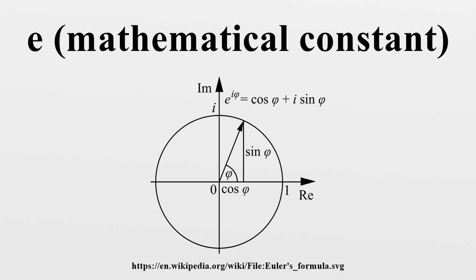The one half in the exponent ensures that the distribution has unit variance. This function is symmetric around x equals 0, where it attains its maximum value, and has inflection points at plus 1 and minus 1.